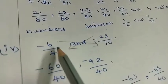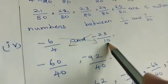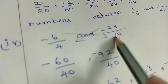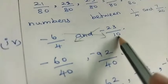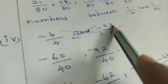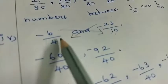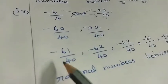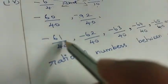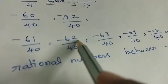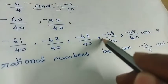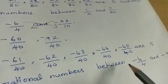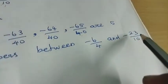Fourth one: minus 6 by 4 and minus 23 by 10. We cross multiply: 6 into 10 is 60, so minus 60 by 40. 23 into 4 is 92, so minus 92 by 40. The 5 rational numbers between them are: minus 61 by 40, minus 62 by 40, minus 63 by 40, minus 64 by 40, minus 65 by 40.